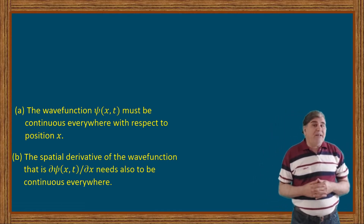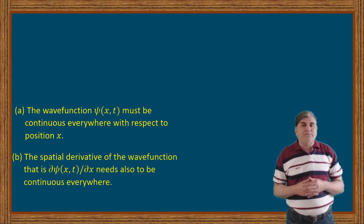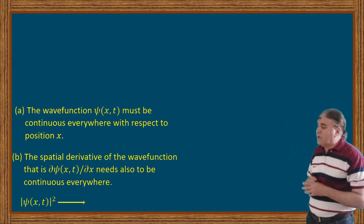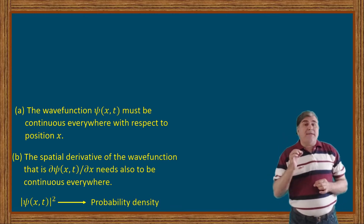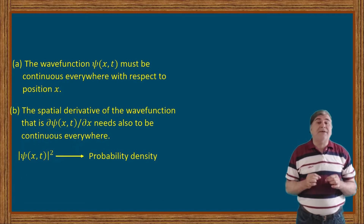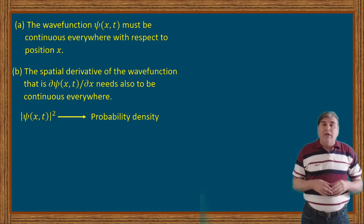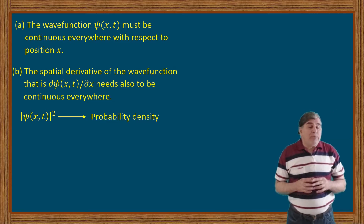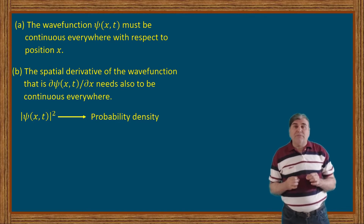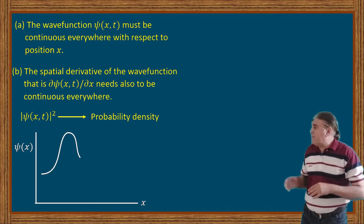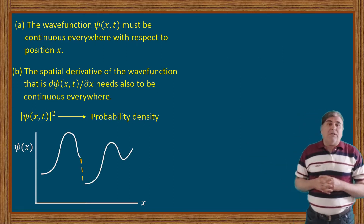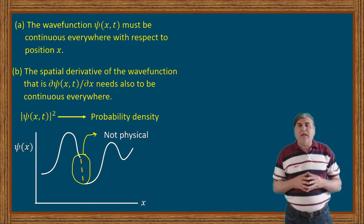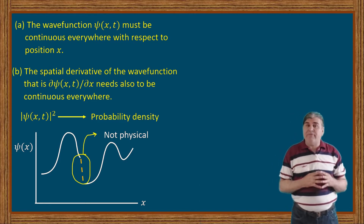The first requirement can be understood intuitively with no mathematical proof. From the probabilistic interpretation of the wave function, we know that the absolute square of the wave function gives probability density, and the probability density for a particle varies continuously from point to point. Now if the wave function is discontinuous or broken in some region of space, the prediction of the probability near the jumps would become ambiguous. For a broken wave function of this form, the probability for finding the particle in the broken region is not physical. So to avoid such ambiguities, the wave function must be continuous everywhere within the region.